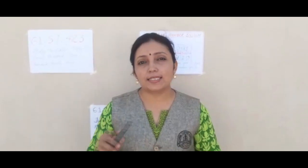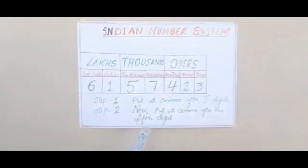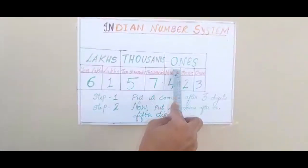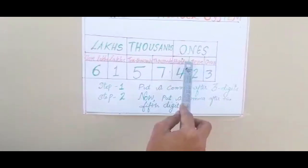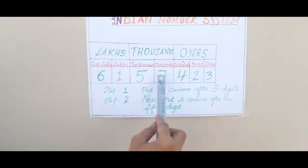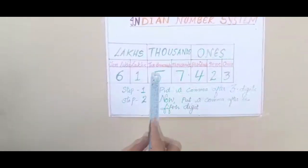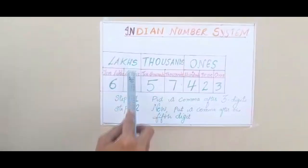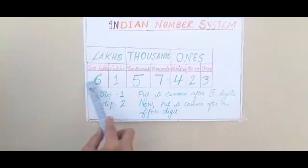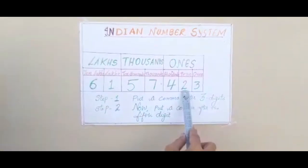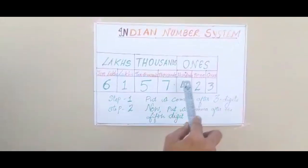Our Indian number system is divided into different groups that we can call periods. The first group is the Ones period — it has ones, tens, and hundreds. Then we have the Thousands period — thousands and ten thousands. Then we have the Lakhs period — lakhs and ten lakhs. All the digits are placed under these different place values.